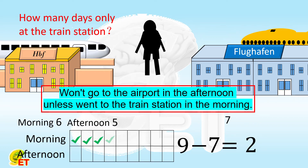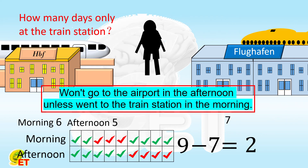Specifically, he went to the train station for six days in the morning, so in the morning he must go to the airport for three days. He went to the train station five days in the afternoon, so he must go to the airport four days. During the four days when he went to the airport in the afternoon, he must go to the train station in the morning. During the three days he went to the airport in the morning, he must go to the train station in the afternoon. So for only two days, he went to the train station both in the morning and afternoon.